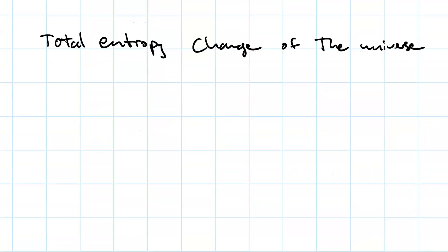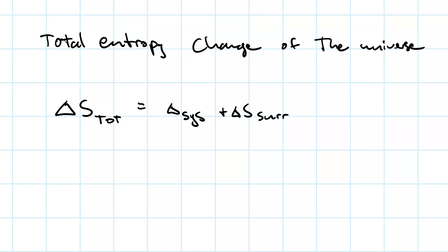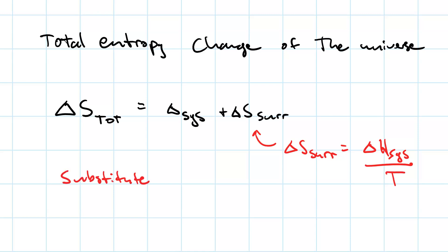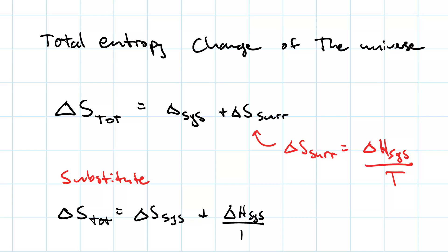What about the total entropy change of the universe? If we break the universe up into two components — the system and its surroundings — we have delta S total equals delta S of the system plus delta S of the surroundings. Under the right conditions, we can say delta S of the surroundings equals delta H of the system divided by the temperature. So then, substituting in, delta S total equals delta S of the system plus delta H of the system divided by the temperature.